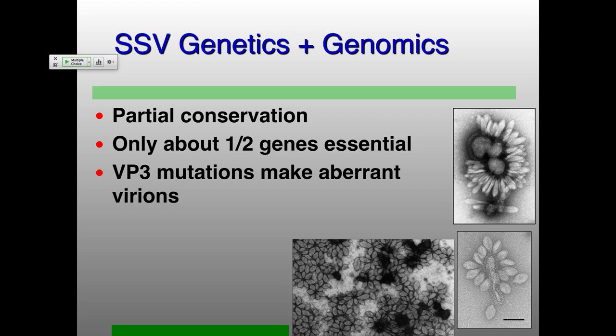It's very surprising that only about half the genome is completely conserved. Our genetic approach showed that about half the genes are essential and about half are non-essential — which is really weird. Most viruses, when you knock out half their genes, the virus is no longer functional. But in this case the virus seems to be able to survive in the lab, infecting the one host we're looking at. And this mutation in a completely conserved gene still gives functional but aberrant virions — very much elongated relative to wild type.